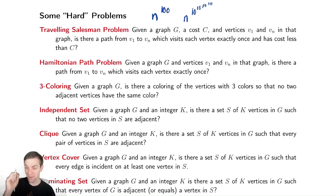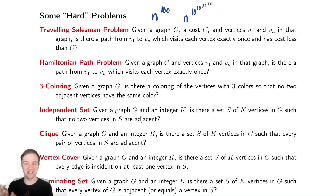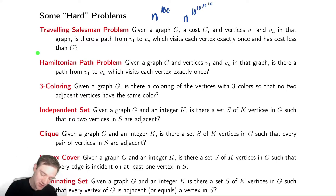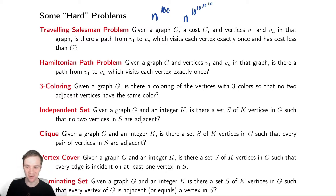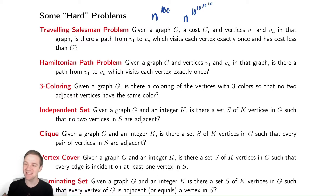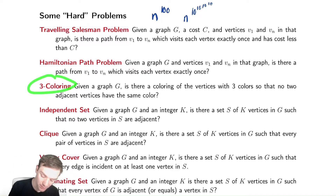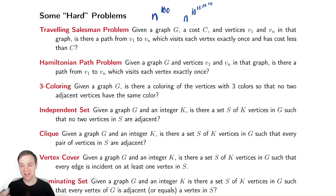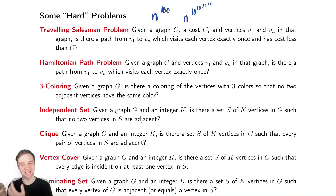These are all considered very hard problems, but most of them sound very easy. For example, the Hamiltonian path problem sounds like it should be very doable — it's just: can I find a path that hits every vertex and does it only once? It doesn't sound like that's hard. Similarly, things like the three-coloring problem: given a graph, can I color it with three colors so that no adjacent vertices share a color? That sounds like it should be very easy. It's not.